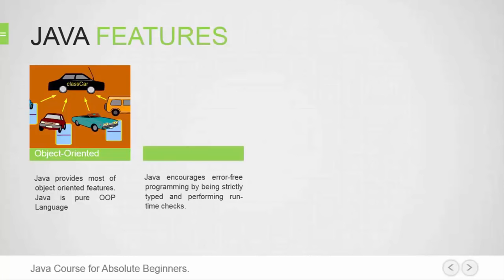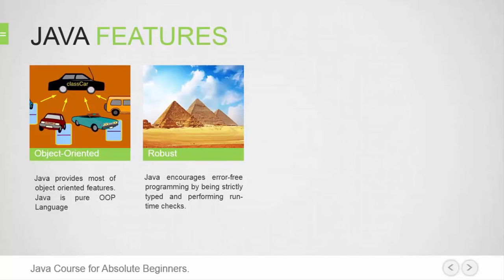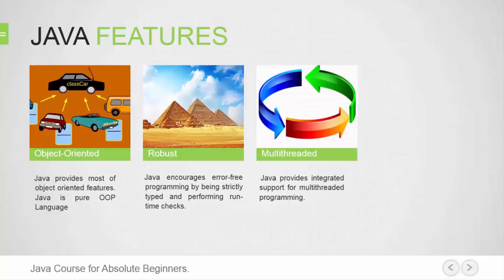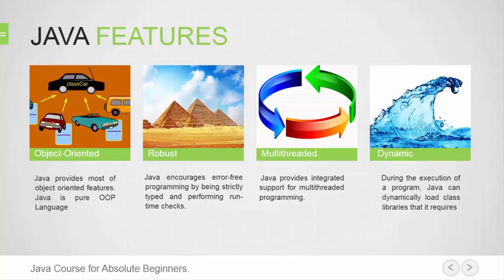Sixth: Robust. Java is designed to eliminate certain types of programming errors. Java is strongly typed, which allows extensive compile-time error checking. It does not support memory pointers, which eliminates the possibility of overwriting memory and corrupting data. In addition, it has automatic memory management called garbage collection. Seventh: Multithreading — means handling more than one job at a time. Java supports multithreading with multiple threads of execution and a set of synchronization primitives. Eighth: Dynamic language. Java supports dynamic loading of classes, capable of linking new classes, methods, and objects — also known as load-on-demand, dynamic compilation, and automatic memory management. Java is also designed to support various levels of network connectivity.